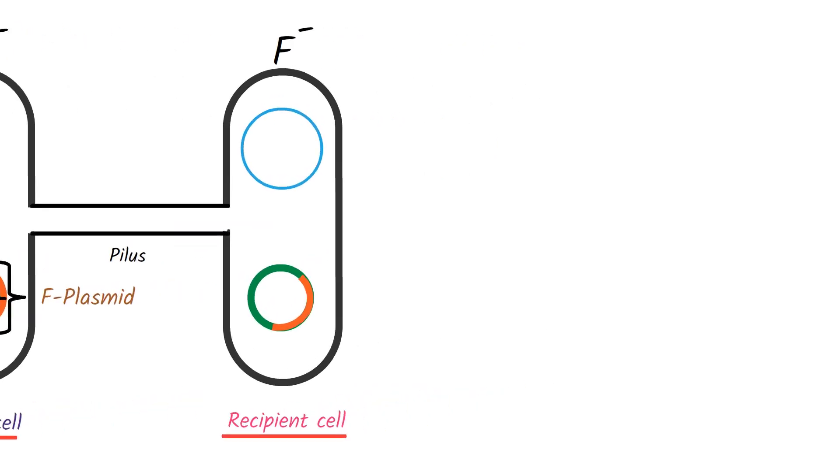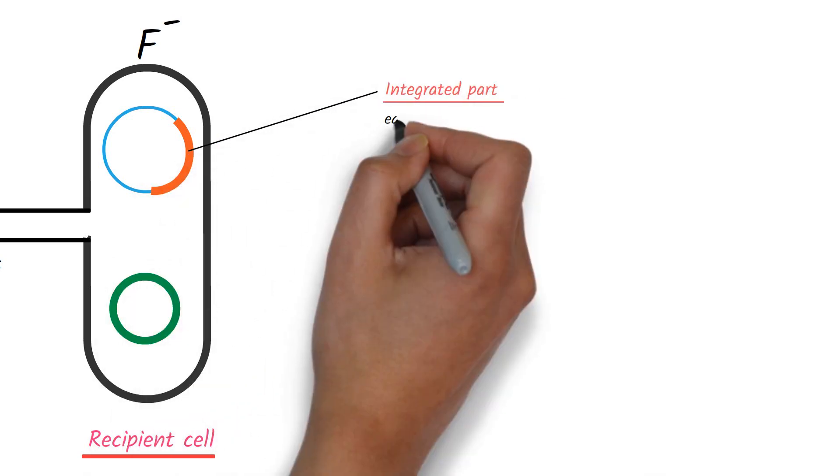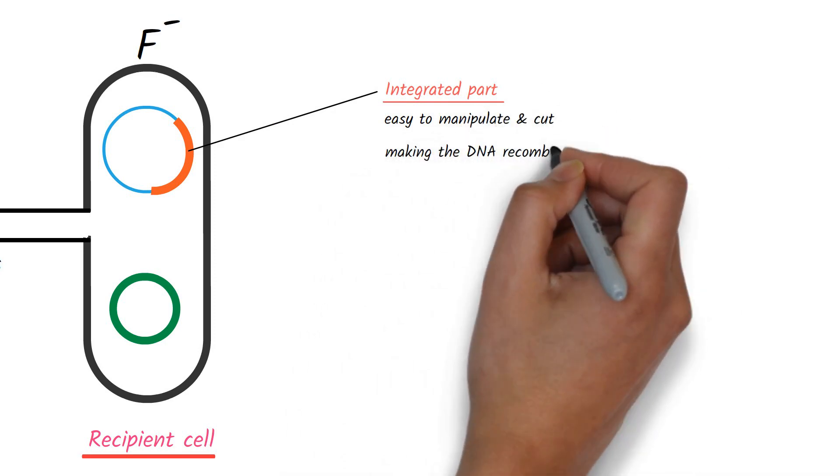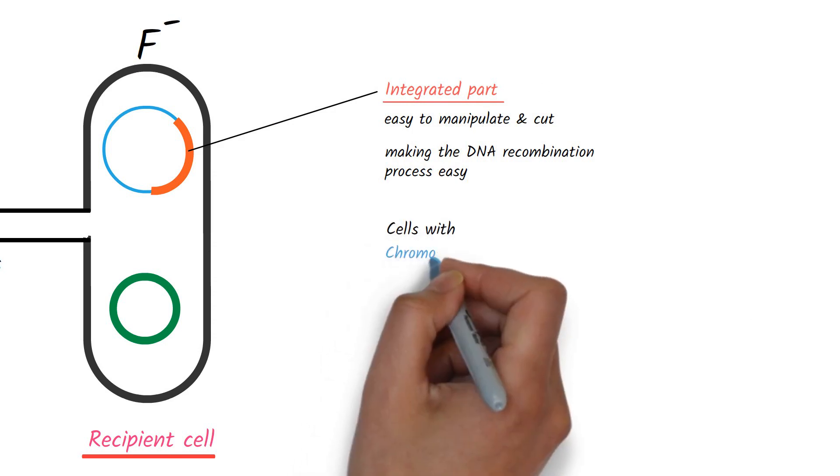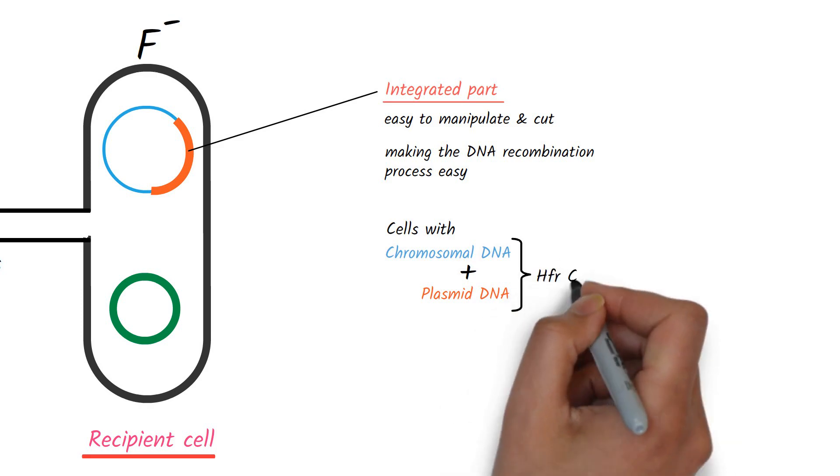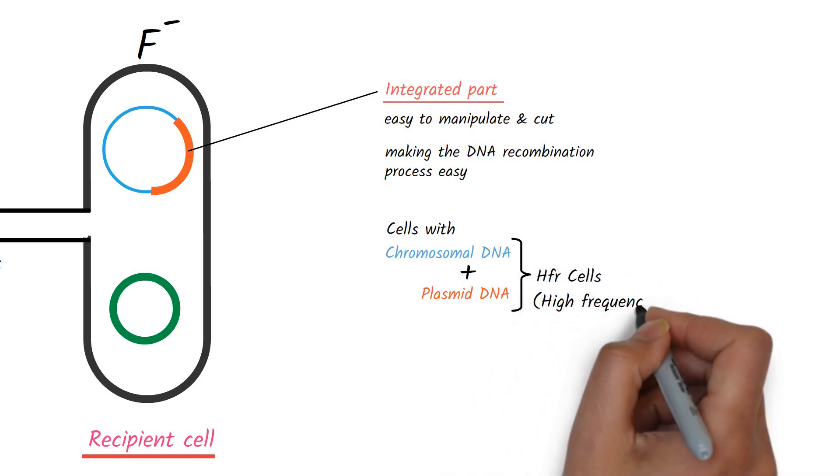Sometimes, the F factor of F plus cell integrates with the bacterial chromosome of F minus cell after conjugation. The integrated part of plasmid is easy to manipulate and cut, making the DNA recombination process easy. That is why cells that have the chromosomal DNA integrated with plasmid DNA are called HFR cells. HFR stands for high frequency of recombination.